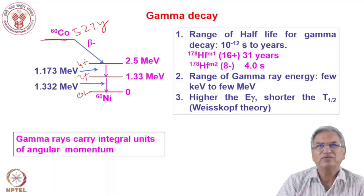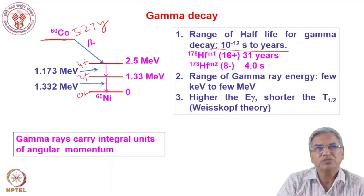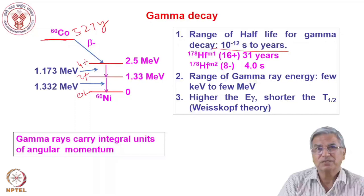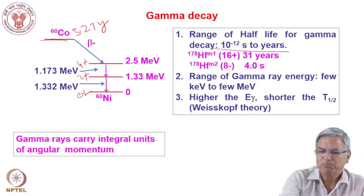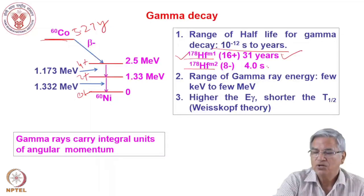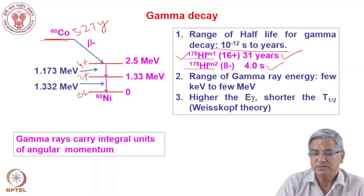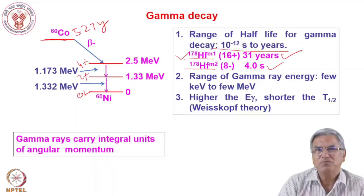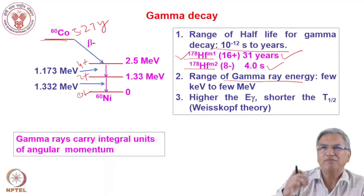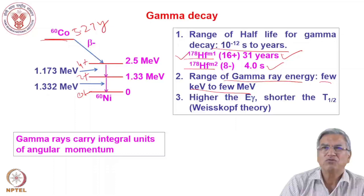The range of half-lives for gamma decay spans enormously — from 9 picoseconds to years. States with lifetimes beyond picoseconds to nanoseconds or microseconds are called metastable or isomeric states. For example, hafnium-178 has two isomeric states m1 and m2 with half-lives of 31 years and 4 seconds. The half-life depends on the change in angular momentum associated with the gamma decay. The energy of the gamma ray is the spacing between nuclear levels, ranging from a few keV to a few MeV.